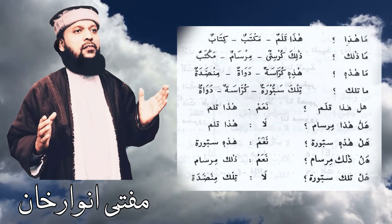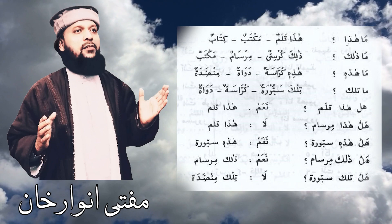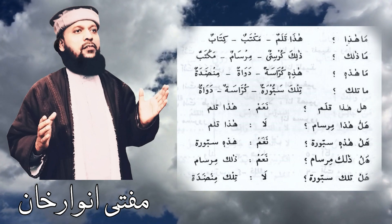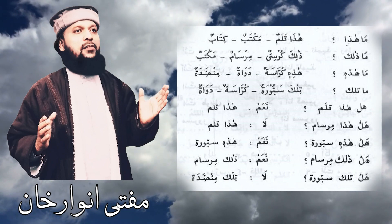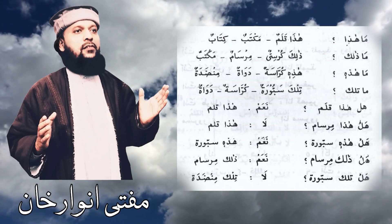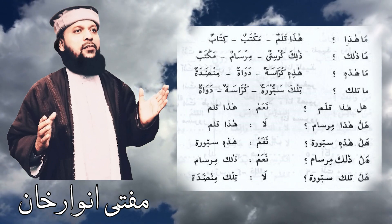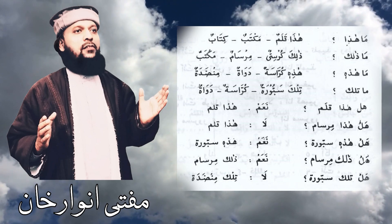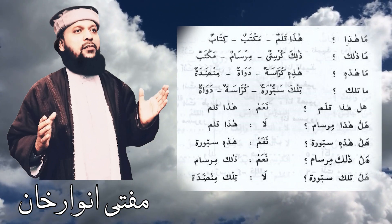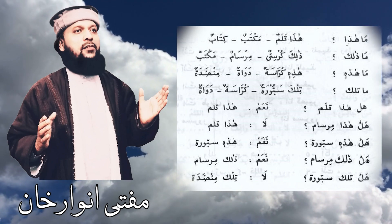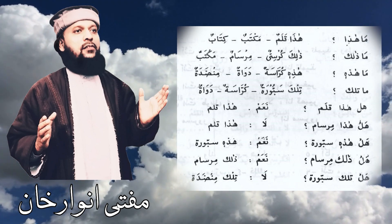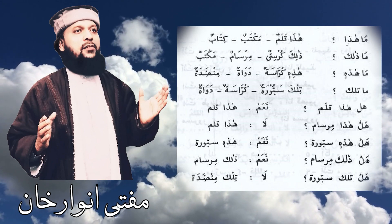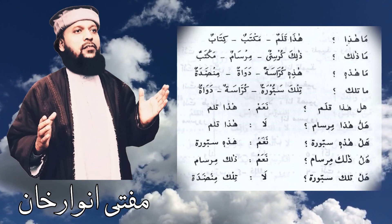Ma hadha — What is this? You can say: Hadha kalamun — This is a pen. Hadha maktabun — This is a writing table. Hadha kitabun — This is a book. Ma dalika — What is that? Dalika kursiyun — That is a chair. Dalika mirsamun — That is a pencil. Dalika maktabun — That is a writing table. Ma hadhi — What is this? Hadhi kurrasatun — This is a notebook. Hadhi dawaatun — This is an inkpot. Hadhi minzadatun — This is a desk. Ma tilka — What is that? Tilka sabburatun — That is a blackboard. Tilka kurrasatun — That is a notebook. Tilka dawaatun — That is an inkpot.